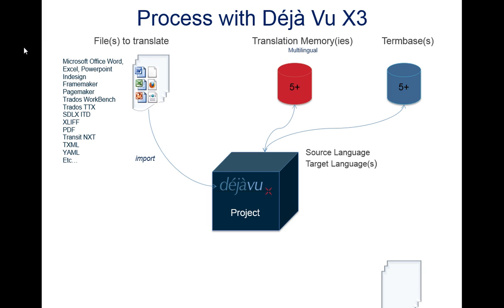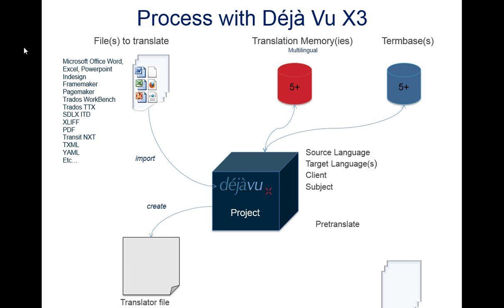Then you can import the document and play around with the options depending on the result you are expecting. Then you specify the client and the subject for this project. Then it's time to run the pre-translation. If you are working with other translators or colleagues, you can export what we call the translator file. If they are also using Deja Vu X3 or X2, you can send them what we call a satellite file.